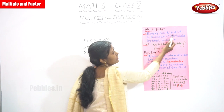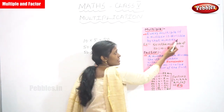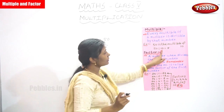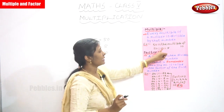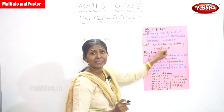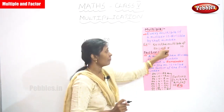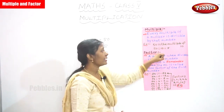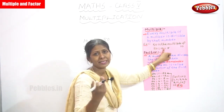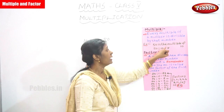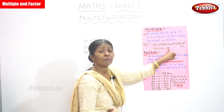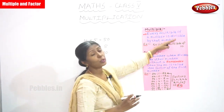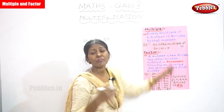Every multiple of a number is divisible by that number. If you multiply 10 into 5, you can get 50. If you divide 50 by 10, you can get 5. Again, 50 divided by 5, you can get 10. So that is the proper explanation of multiple.